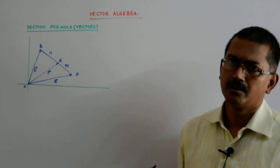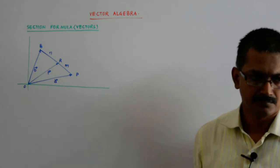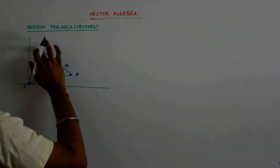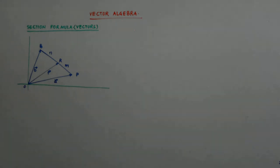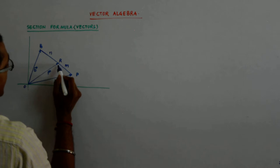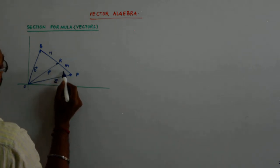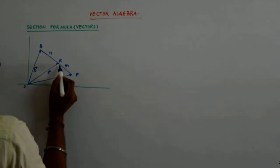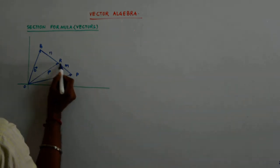Now, how do we go about it? What will you do? See, I can very well find this vector, RP vector. What is RP vector, or PR vector, PR.